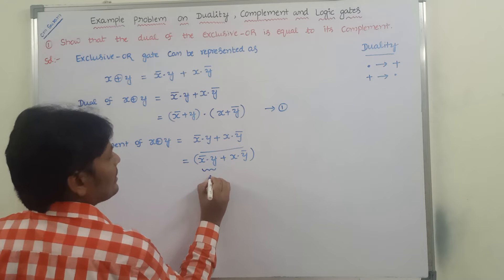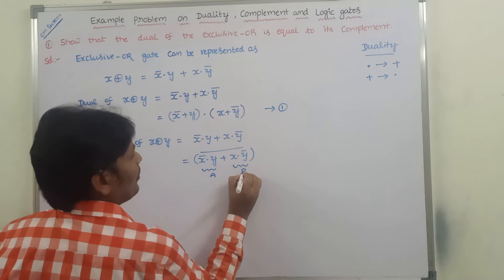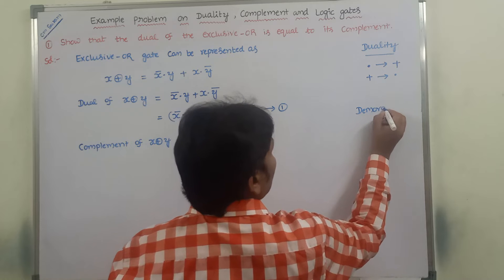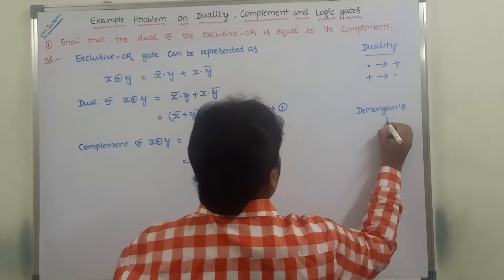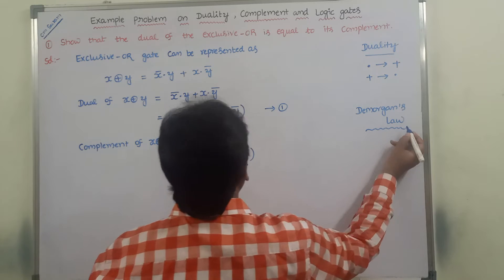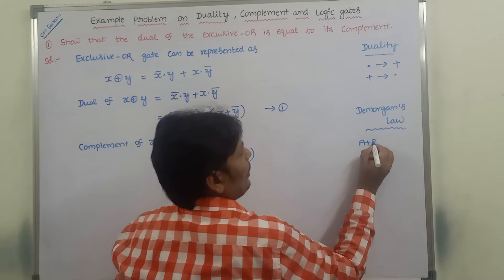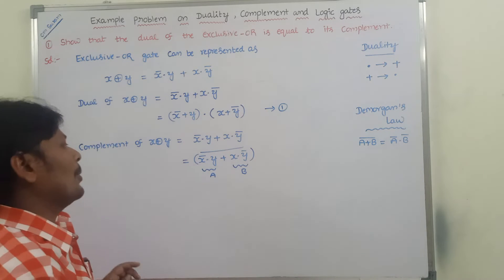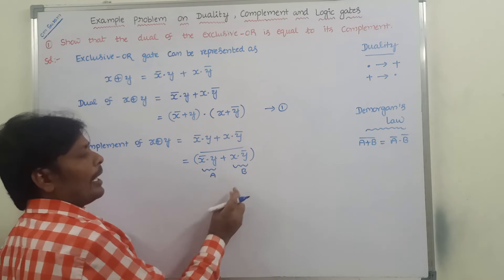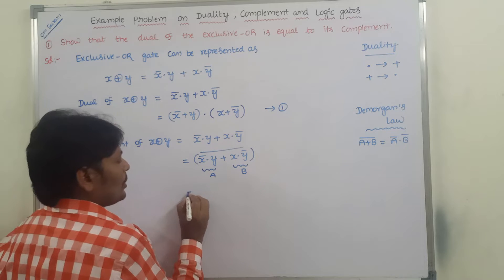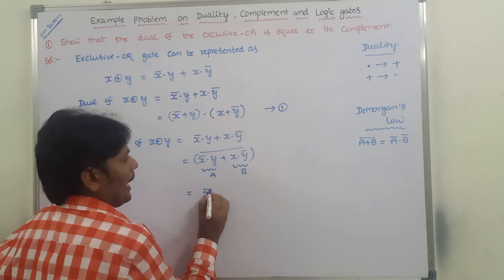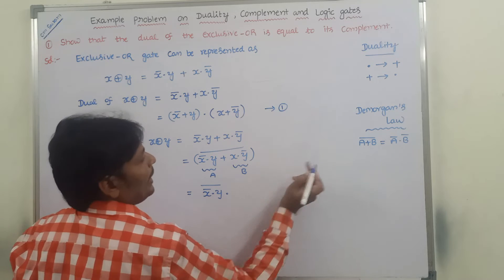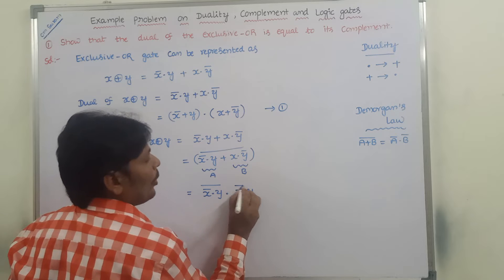Let A = X̄·Y and B = X·Ȳ. We know De Morgan's law: A+B whole bar equals Ā·B̄. So applying this, the complement becomes Ā·B̄, where A bar is X̄·Y whole bar and B bar is X·Ȳ whole bar.